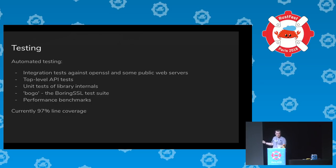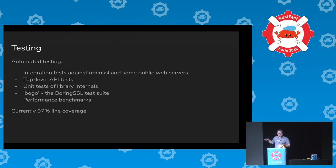Testing is very important. Rustls has 97% line coverage over about 6,800 lines of code. In comparison, OpenSSL's automated testing is about 65% — which is the equivalent of 40,000 lines of uncovered code shipped in every release.